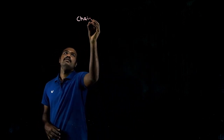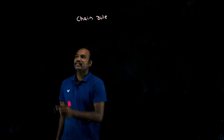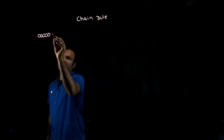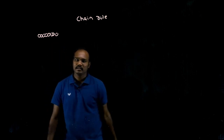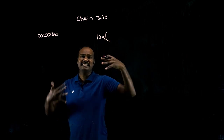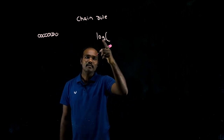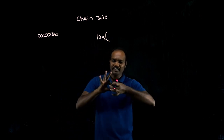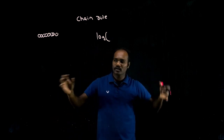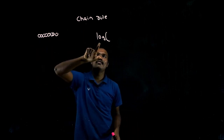What is chain rule? See how chains are made — there will be so many rings attached to each other. In the same way, we will have so many functions chained together. The ring is a function — log x, sine x, cos x, x squared — they are chained to each other.